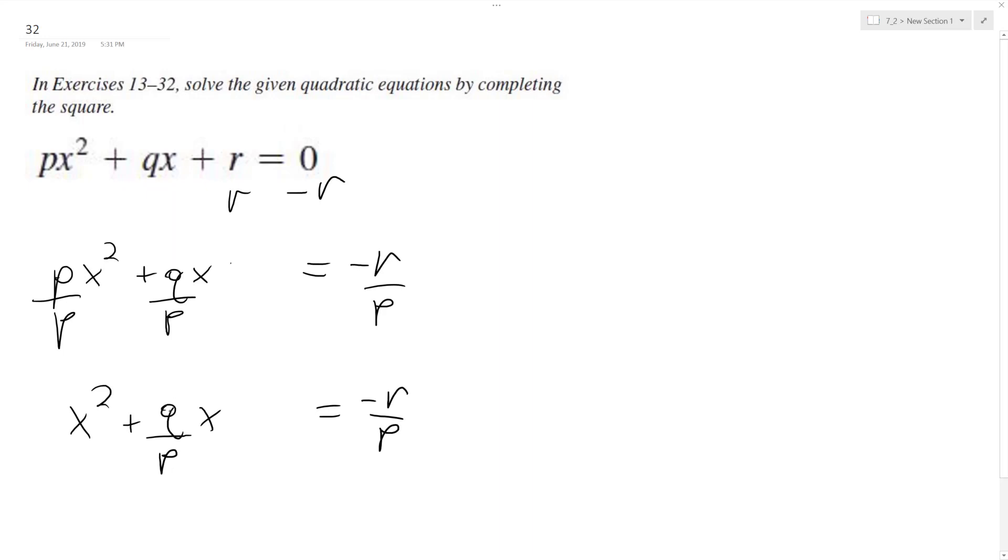So then half of this is going to be equal to q over 2p, which ends up being q squared over 4p squared. So we get plus q squared over 4p squared.